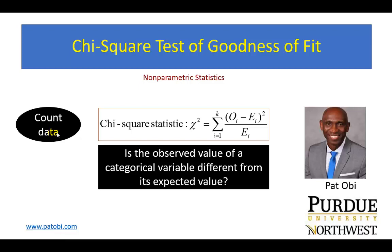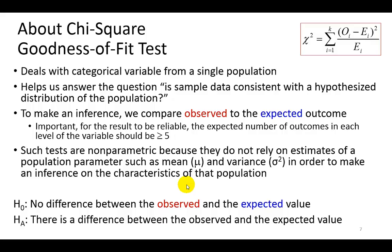Specific to this type of analysis, we're going to ask the question: is the observed value of that categorical variable different from what we expect? We seek to determine if the observed sample distribution matches, or fits, the expected values — hence the term goodness of fit.